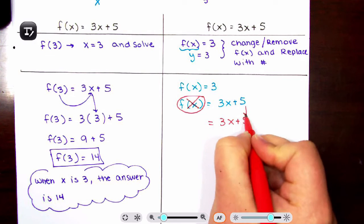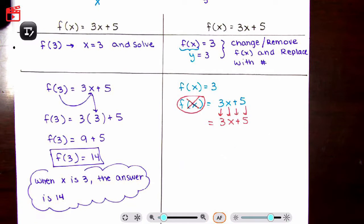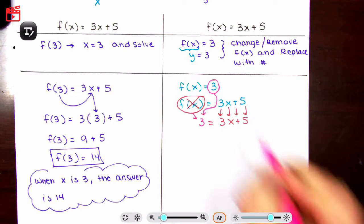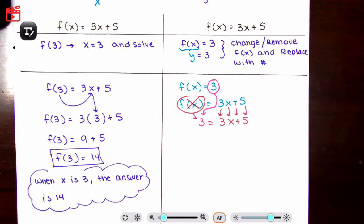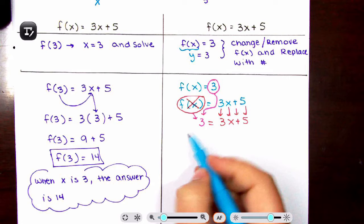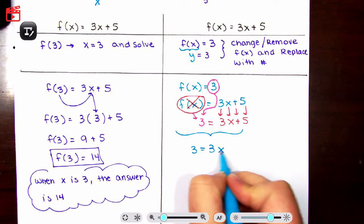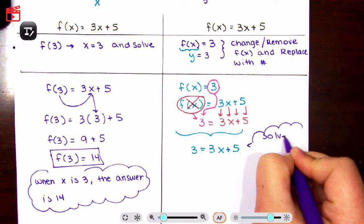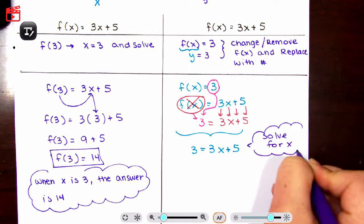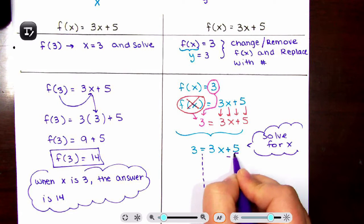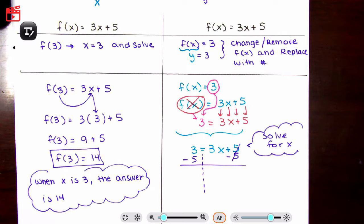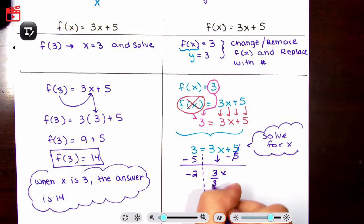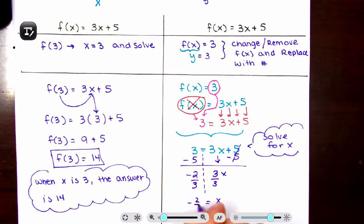Everything else gets copied — don't change anything here. You're going to take this 3 and replace it where f of x was. You're going to replace f of x with that number. So what you have is 3 equals 3x plus 5. Your goal here is to solve for x — you need to get x by itself. So you are solving equations. Minus 5 from both sides: 3 minus 5 equals negative 2 equals 3x. Divide by 3 on both sides. x is equal to negative 2 thirds.